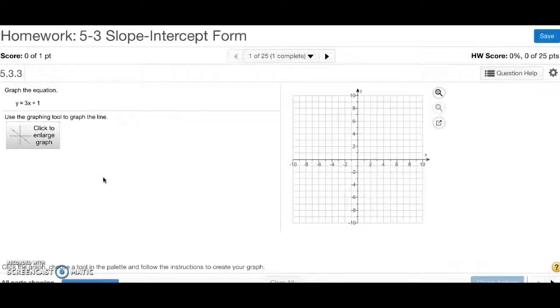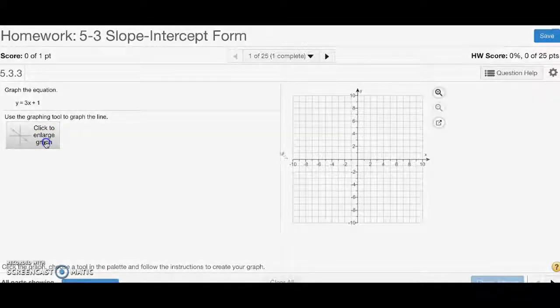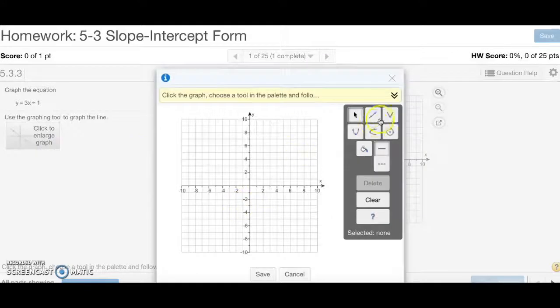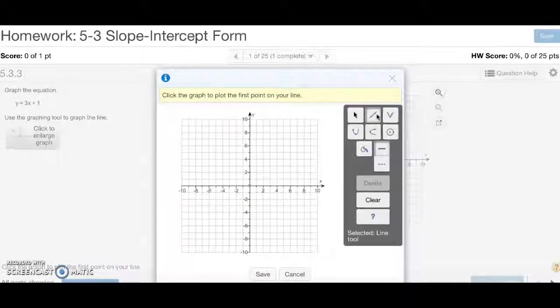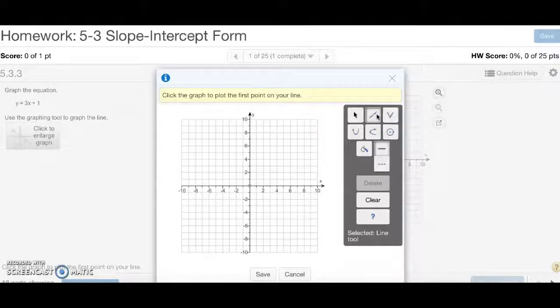Number 1, graph the equation. So I'm going to click to enlarge the graph and click line. Now, in slope-intercept form, we have y equals mx plus b. m is the number in front of x, and b is what's being added or subtracted from it. m is the slope, b is the y-intercept.